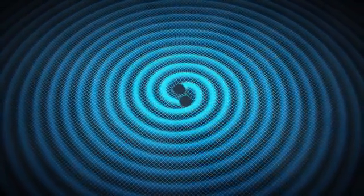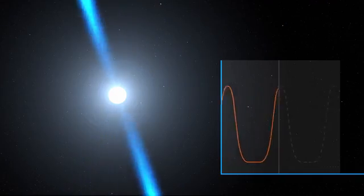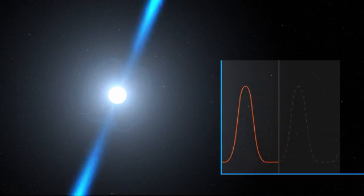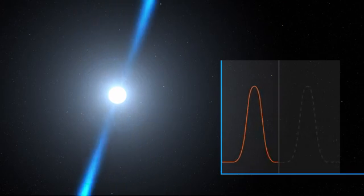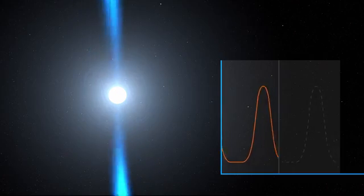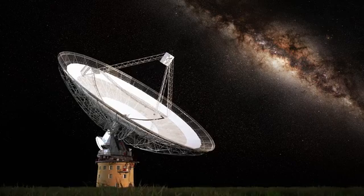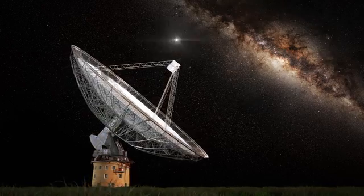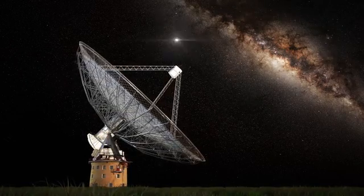My colleagues and I are searching for gravitational waves using the cores of collapsed stars, pulsars. Pulsars emit beams of radio waves that sweep by the Earth, appearing as regular ticks. We've used the CSIRO Parkes Radio Telescope to monitor 20 pulsars in our galaxy over many years.